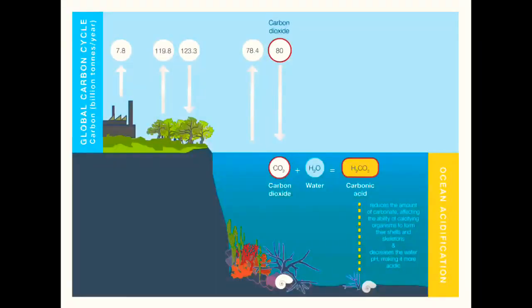The main cause of ocean acidification is the burning of fossil fuels. Ocean acidification reduces the amount of carbonate, a key building block in seawater. This makes it more difficult for marine organisms such as coral and some plankton to form their shells and skeletons, and existing shells may begin to dissolve.